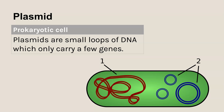Moving on to the three structures only present in some prokaryotic cells. A plasmid is a small loop of additional DNA that normally only carries a few genes — this is where you would find antibiotic resistance genes if a bacterium has one. Not every single prokaryotic cell will have plasmids.